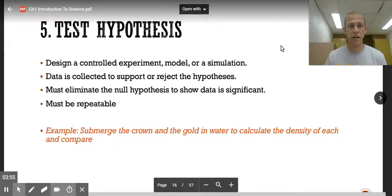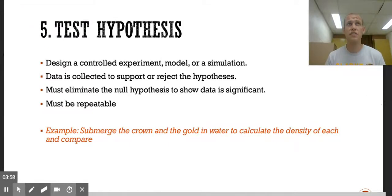Now we're going to test the hypothesis. Testing the hypothesis means that you need a controlled experiment, or a model, or a simulation. You need data that's collected to support or reject the hypothesis. And you must eliminate the null hypothesis to show data is significant. And it must be repeatable, so you have to be able to repeat this. For our testing the hypothesis example, we're going to submerge the crown and the gold in water and calculate the density of each and compare.